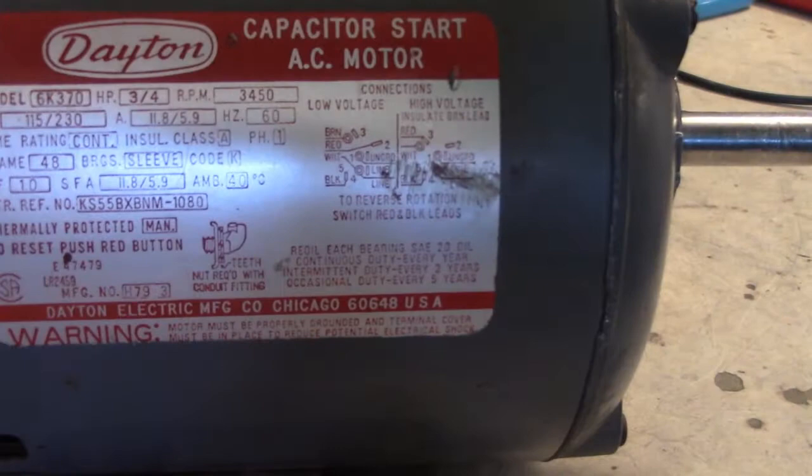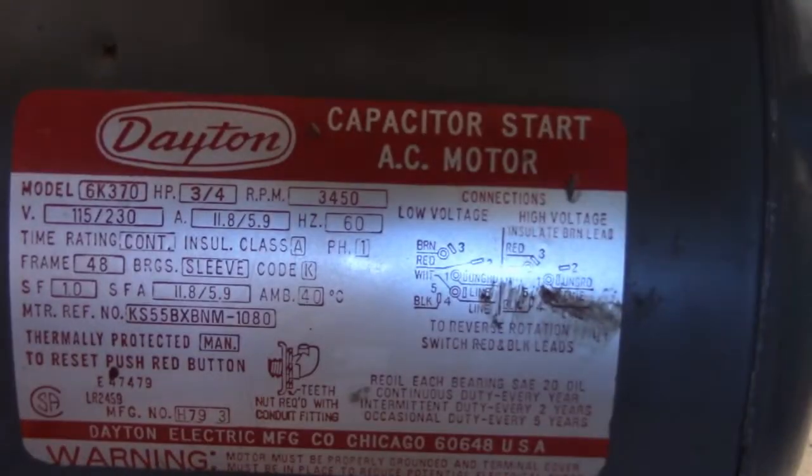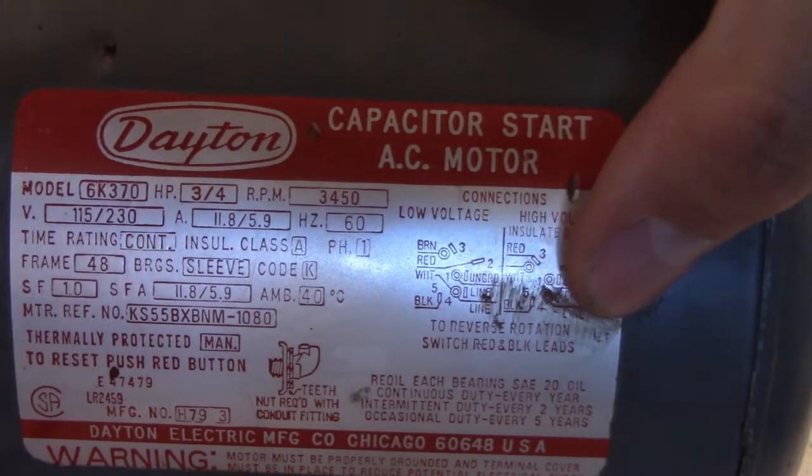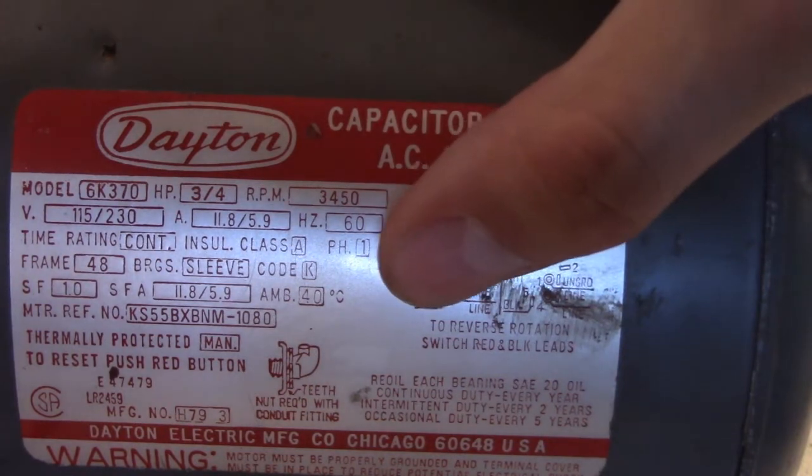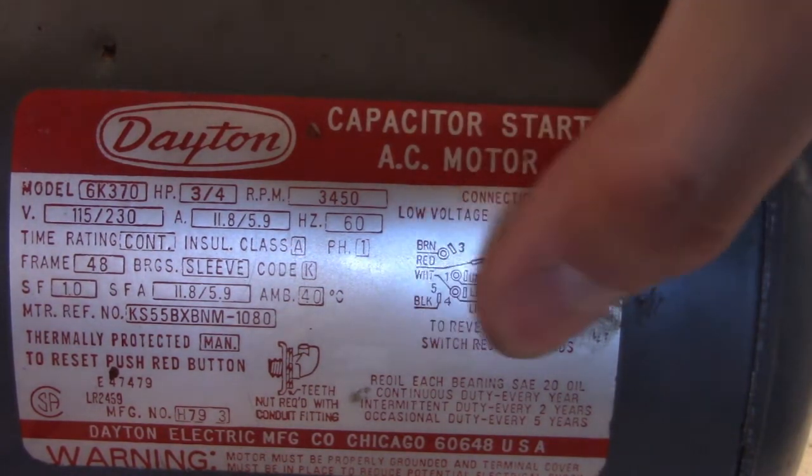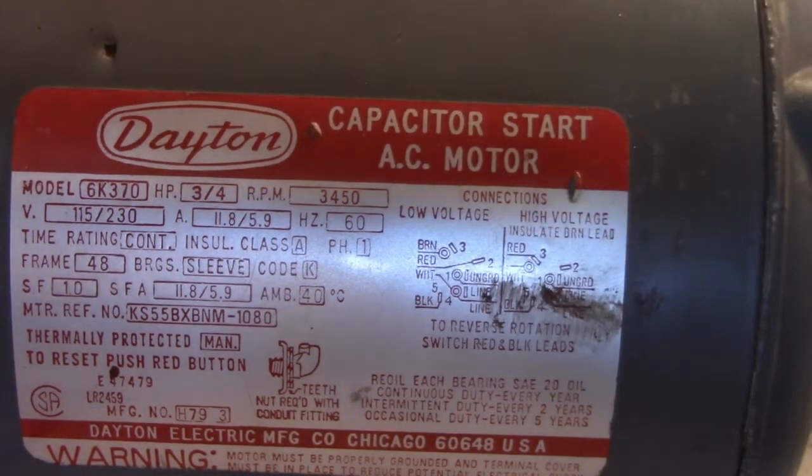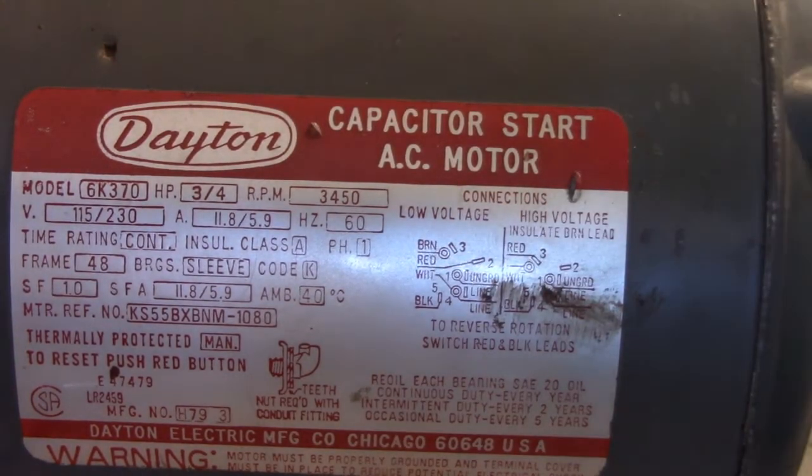It actually says on the motor as well. It says right here, to reverse rotation, switch red and brown, or red and black wires right there. It says it right there on the motor. So always look for that. Your motor may vary depending on what I have.